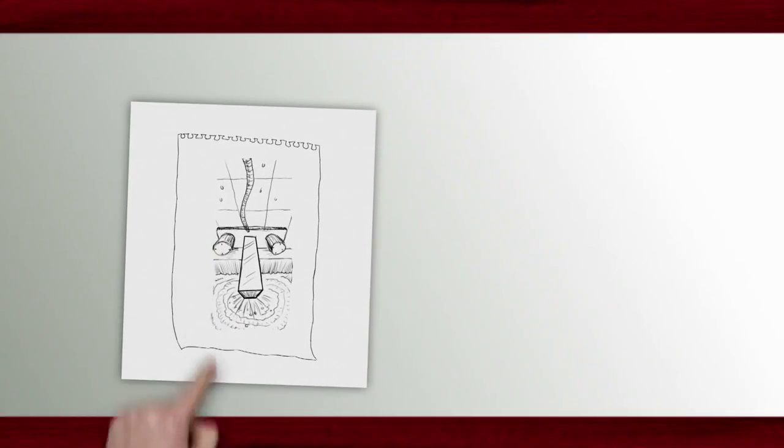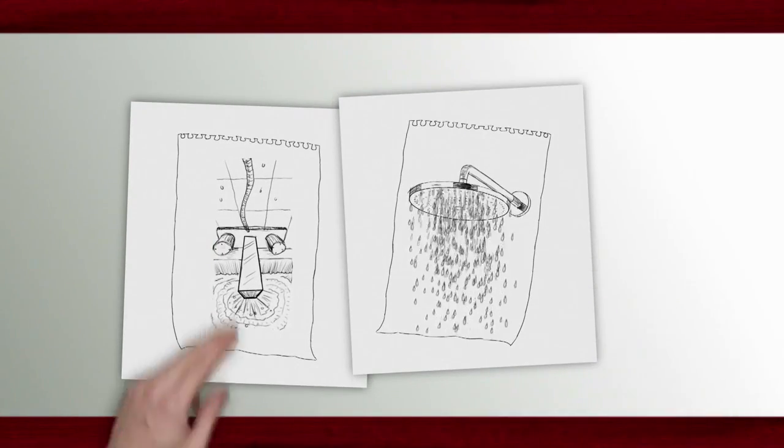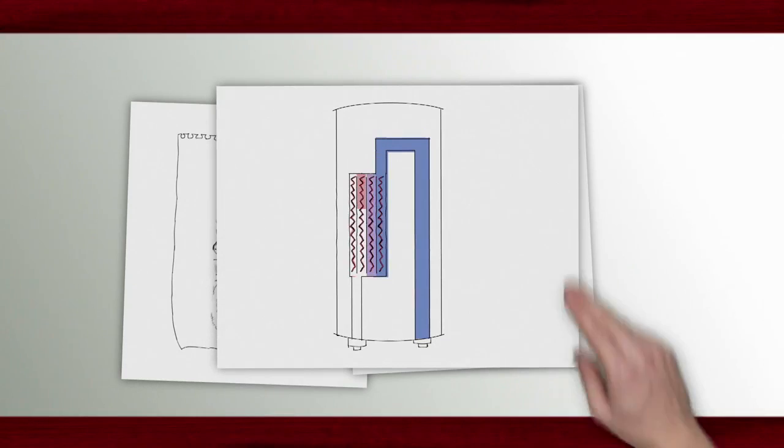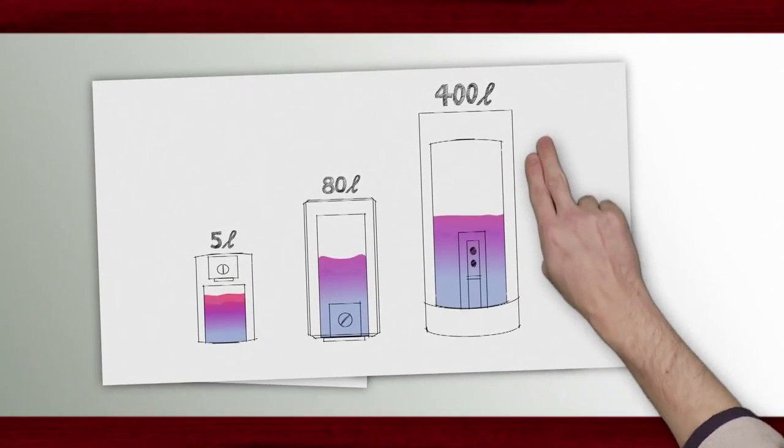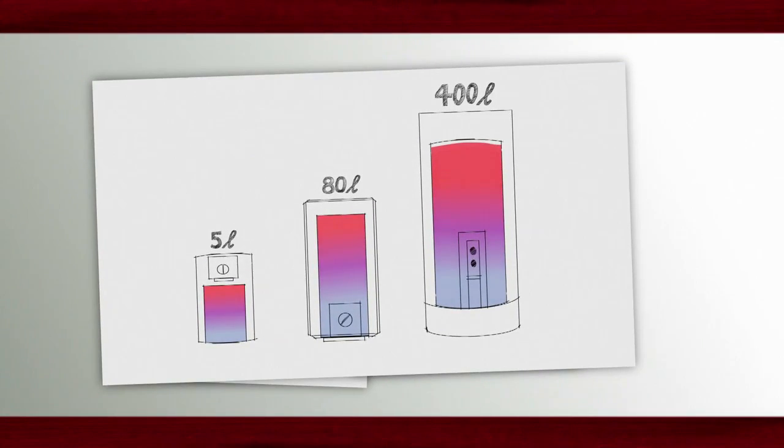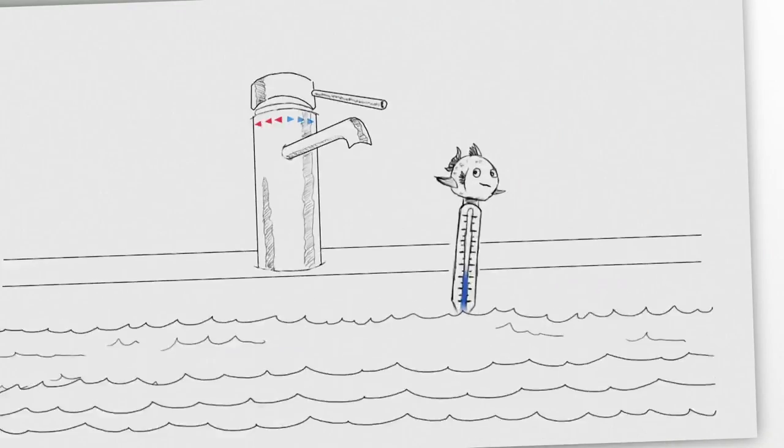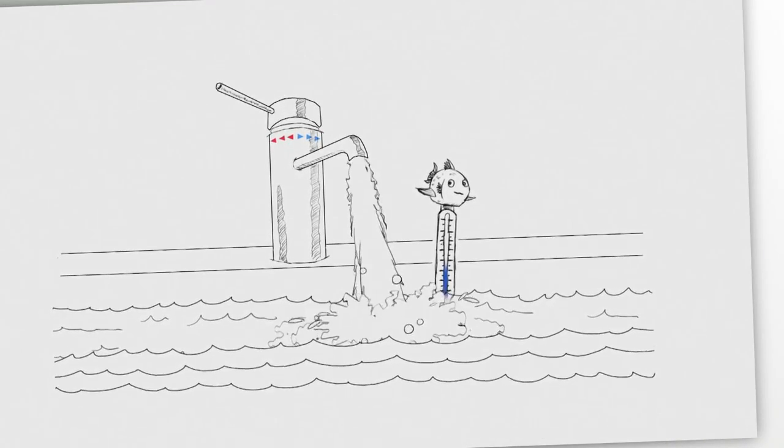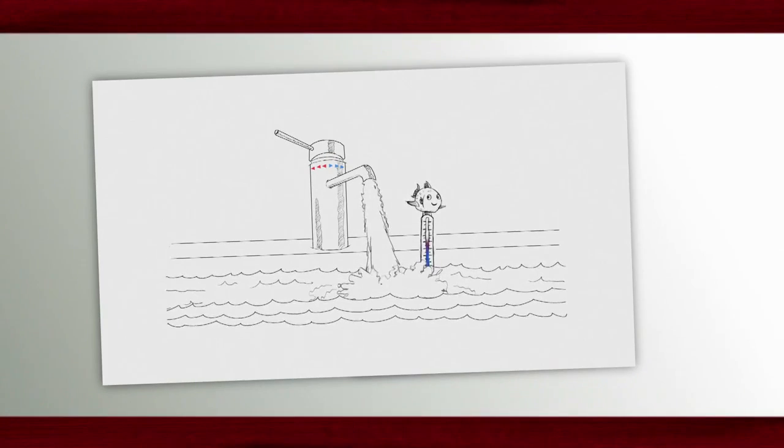In an instantaneous water heater, the water passes directly through the heating element at the point of use. In contrast to other types of water heaters, instantaneous water heaters offer the comfort of instant hot water without storing it. They only produce it when necessary, and that is what makes them so energy efficient.